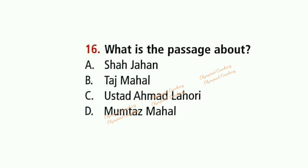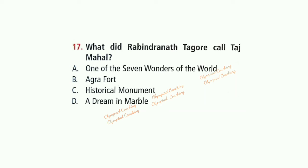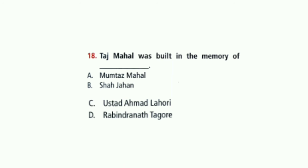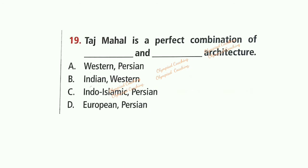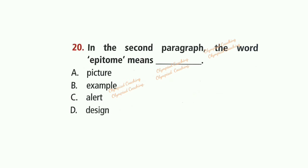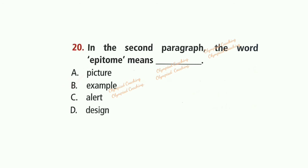Question 16: What is the passage about? Option B is correct: Taj Mahal. Question 17: What did Rabindranath Tagore call Taj Mahal? Option D is correct: A Dream in Marble. Question 18: Taj Mahal was built in the memory of a dash. Option A is correct: Mumtaz Mahal. Question 19: Taj Mahal is a perfect combination of dash and dash architecture. Option C is correct: Indo-Islamic and Persian architecture. Question 20: In the second paragraph, the word 'epitome' means dash. It means a real example. Option B is correct: Example.